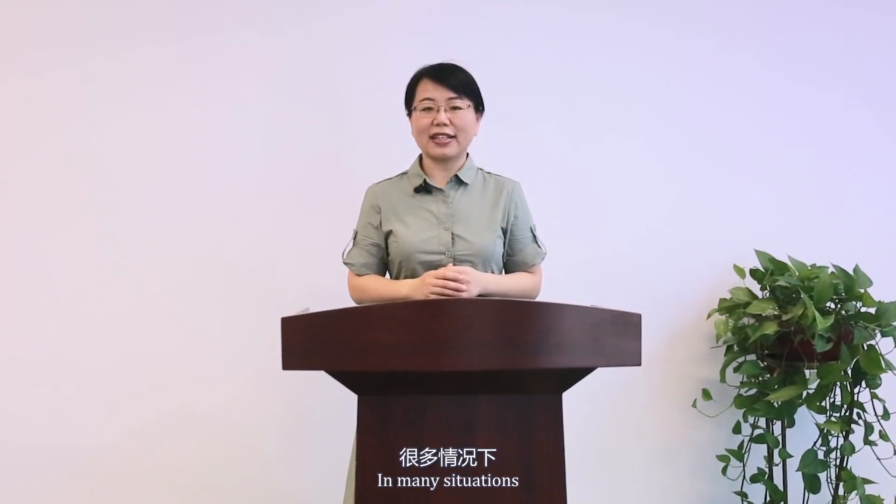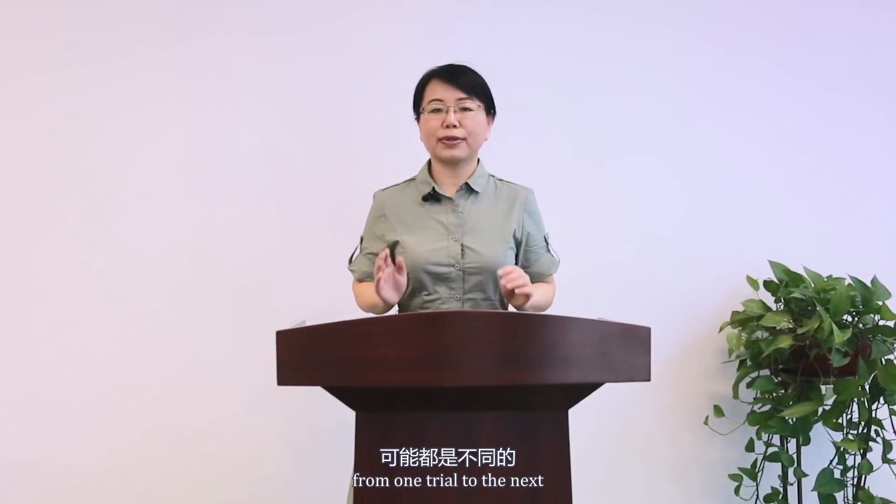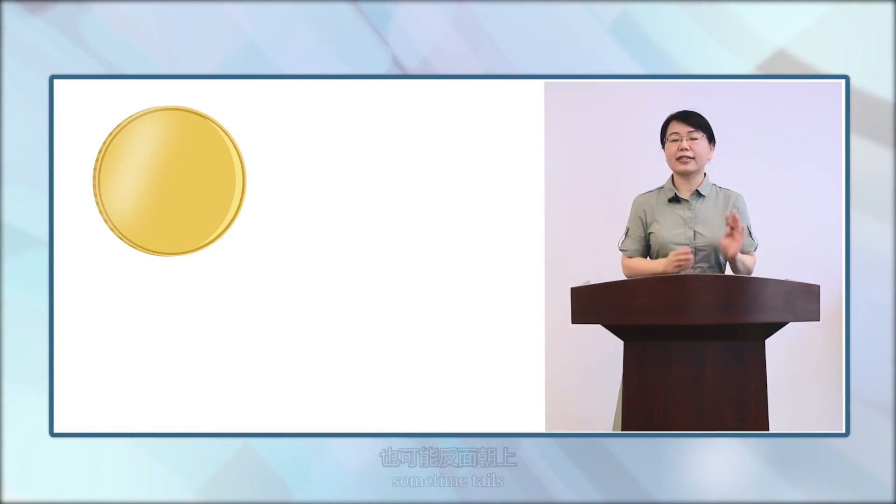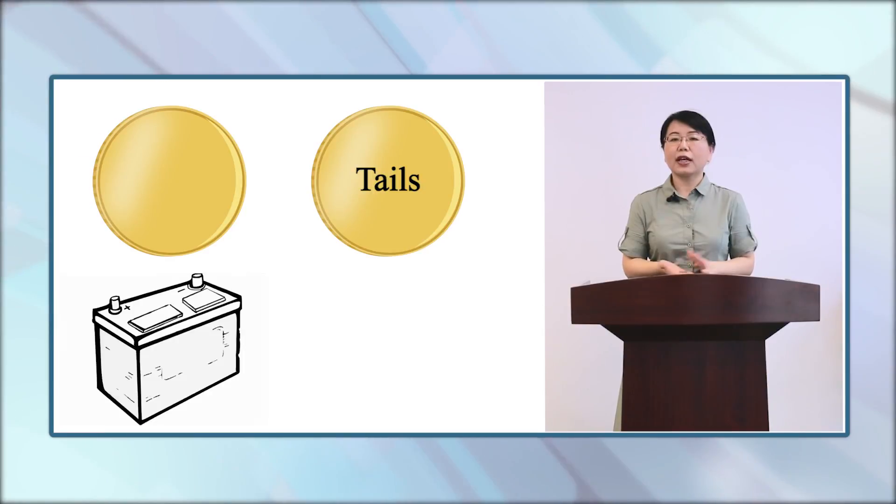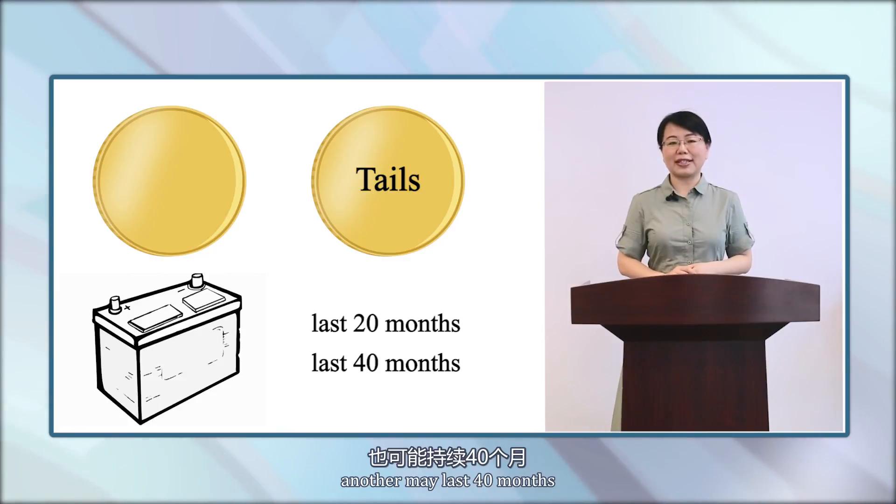In many situations, the outcome of an experiment varies from one trial to the next. For instance, a tossed coin will sometimes land on heads, sometimes tails. One car battery may last 20 months, another may last 40 months.